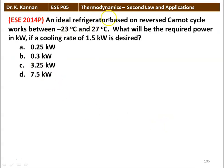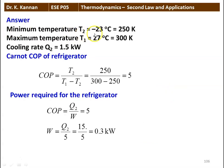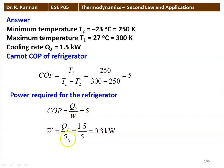Next question: an ideal refrigerator based on the reversed Carnot cycle works between −23°C and 27°C. What will be the required power in kilowatt if a cooling rate of 1.5 kW is desired? Options: 0.25, 0.35, 3.25, or 7.5 kilowatts. Answer: T2 = −23°C = 250 K, T1 = 27°C = 300 K. COP = T2/(T1−T2) = 250/(300−250) = 5. Power W = Q2/COP = 1.5/5 = 0.3 kilowatt.